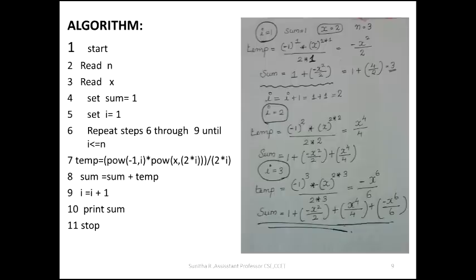So temp equals (-1)^i times x^(2i) divided by (2i). When i equals 1: (-1)^1 times x^2 divided by 2 gives minus x²/2. Then sum equals sum plus temp — so sum equals 1 plus (-x²/2). We get the first accumulated sum value.